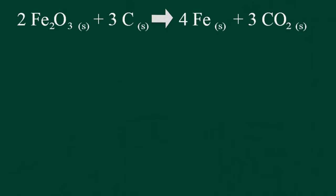We can see from our balanced chemical reaction equation that two molecules of hematite react with three molecules of carbon to produce four molecules of solid iron and three molecules of carbon dioxide gas.